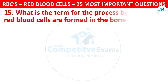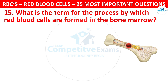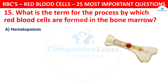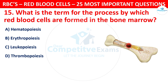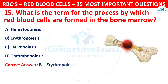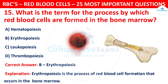Question 15. What is the term for the process by which red blood cells are formed in the bone marrow? Your options are: Hematopoiesis, Erythropoiesis, Leukopoiesis, or Thrombopoiesis. The correct answer is B, that is Erythropoiesis. Erythropoiesis is the process of red blood cell formation that occurs in the bone marrow.